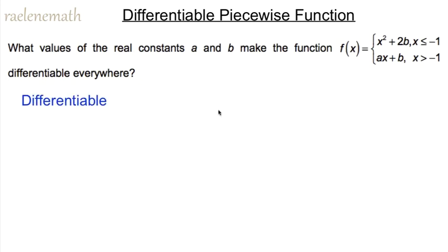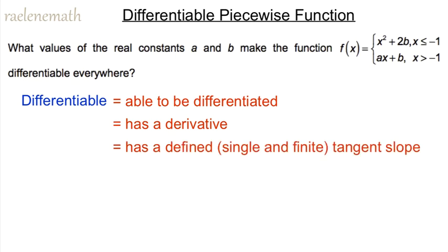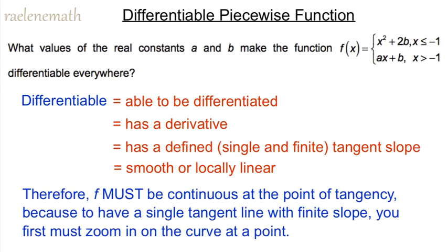To recall, the word differentiable really breaks down to the phrase 'able to be differentiated.' When we differentiate we're talking about finding a derivative, which is a tangent slope. So we're saying that a curve or a function has a single and finite tangent slope. That's calculus speak for saying the curve is smooth or locally linear — when we zoom in far enough at a point of tangency, the graph looks like a line, called the tangent line.